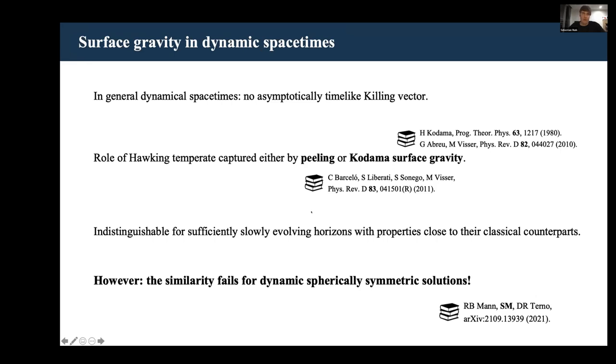For slowly evolving horizons with properties close to their classical counterparts, they're practically indistinguishable. However, and this is one of the main new results from our archive paper, the similarity actually breaks down for the self-consistent spherical symmetric solutions in semiclassical gravity.